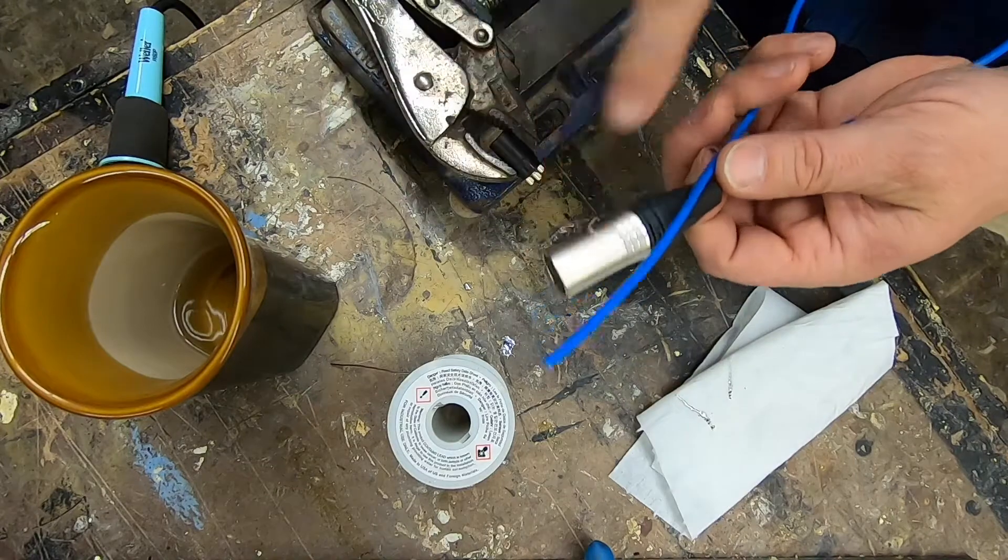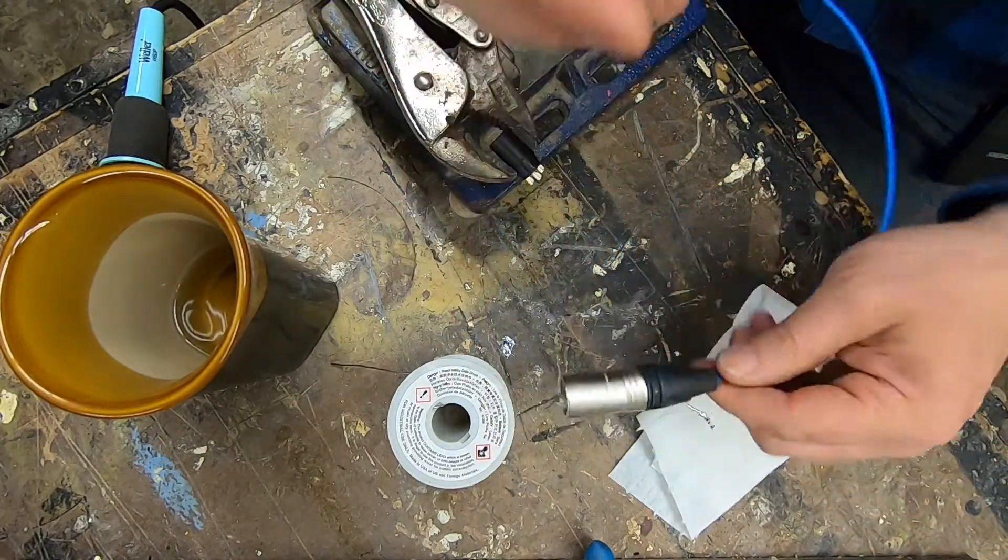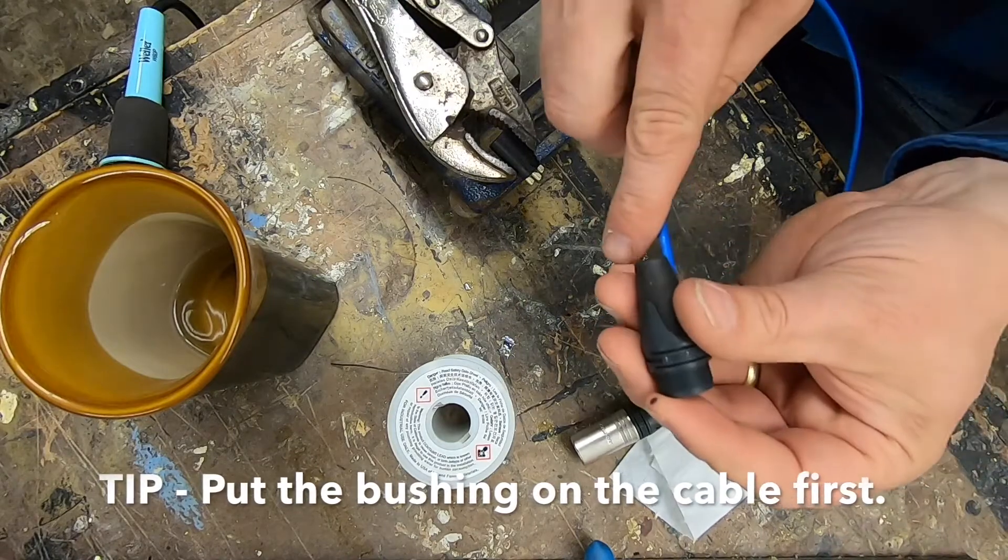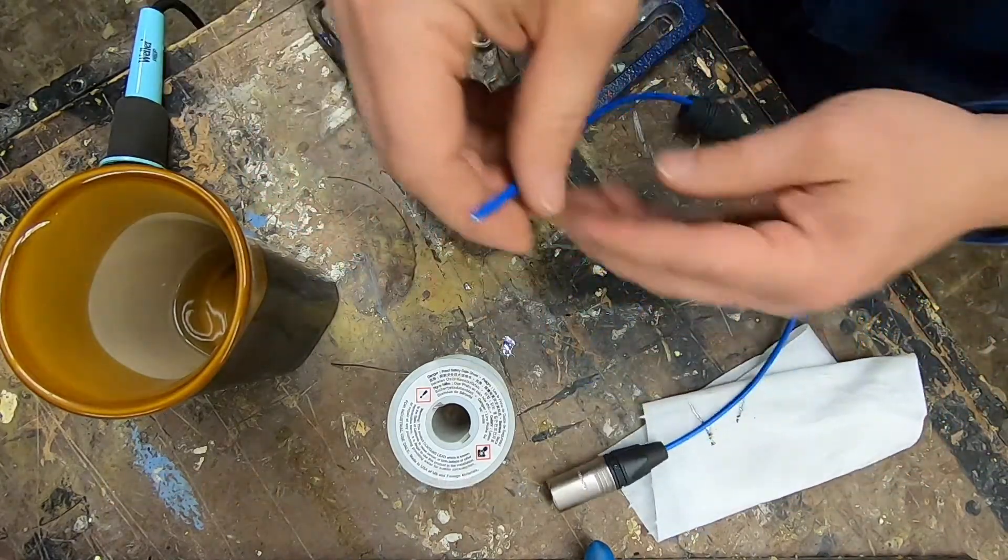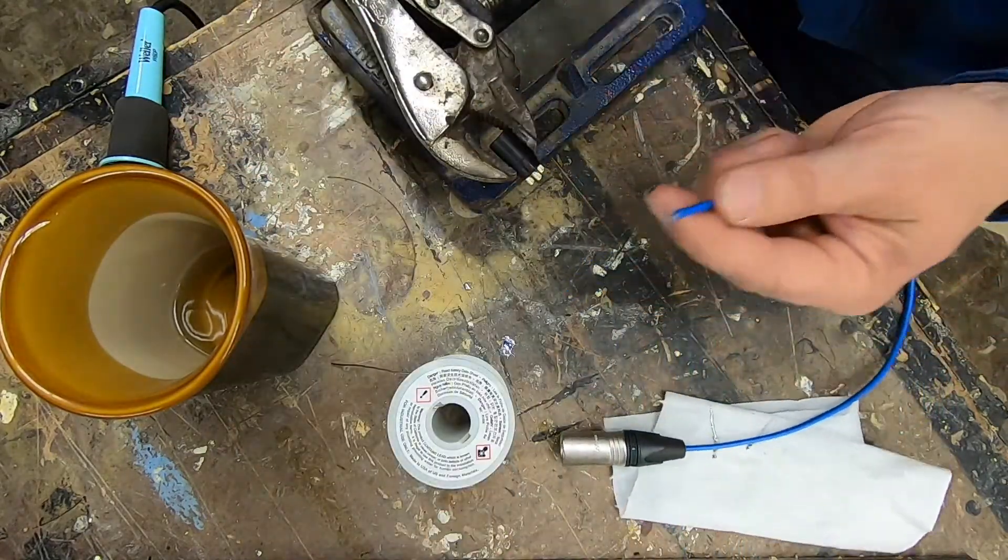Now you saw me slide the bushing on after I soldered, but because this end is already terminated, I need to make sure that I slide the bushing on first. Believe me, I've forgotten to do this step and everything that you just did, you have to unsolder.